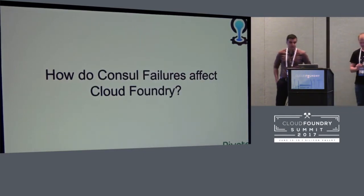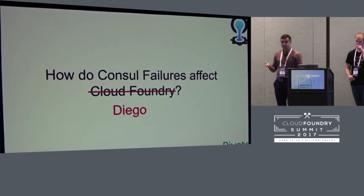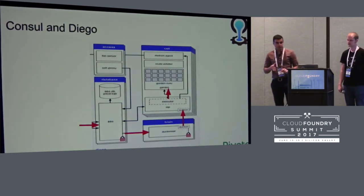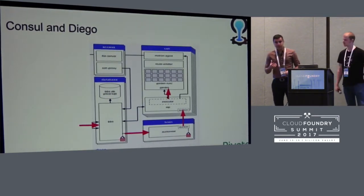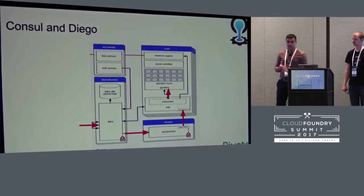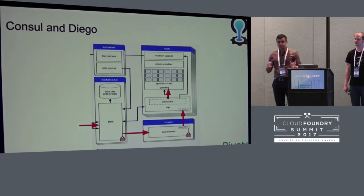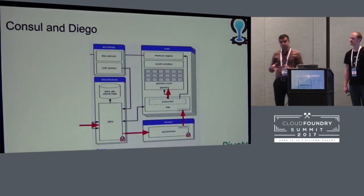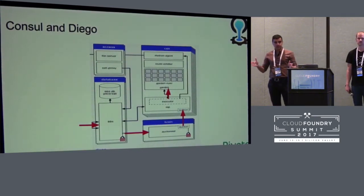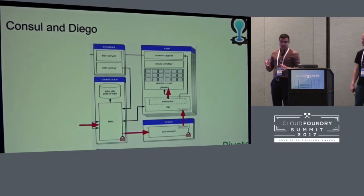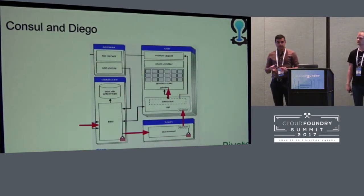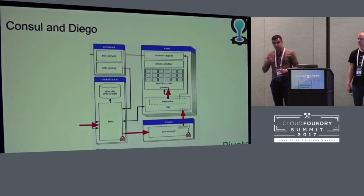Next we'll talk about how Consul failures affect Cloud Foundry and in particular Diego, which is one of the primary users of Consul in the Cloud Foundry ecosystem. When Cloud Controller wants to run a job, it contacts BBS — the Bulletin Board System in Diego — which is the forefront of communications with all other Diego components. It sends the job information and resource requirements. BBS passes that to the auctioneer, the scheduler, which consults all cell VMs for available resources to decide where to schedule the job. It then communicates with the rep — the process representing a cell VM — passes the job information, and the rep launches a container, pulls the code, starts the container, monitors execution, and reports back to BBS.